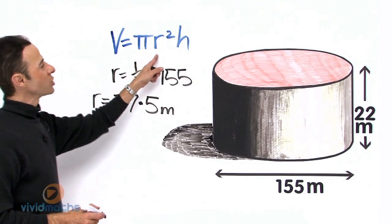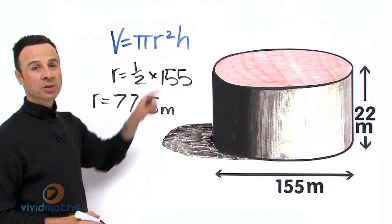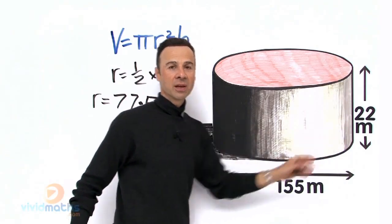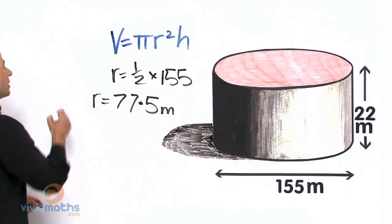There's our formula. Pi r squared is the area, then we'll multiply by the height, which happens to be 22 meters right over here. So let's get to it.